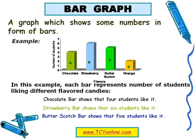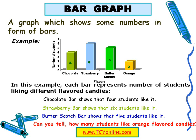The butterscotch bar goes till 5, so butterscotch flavored candy is liked by 5 students. Now, can you tell how many students liked orange flavored candies? Your answer will be 2, because the orange bar goes till 2, so 2 students like orange flavored candies.